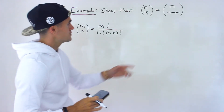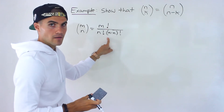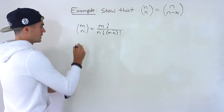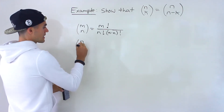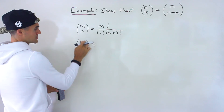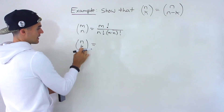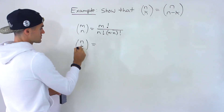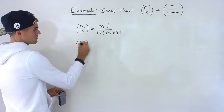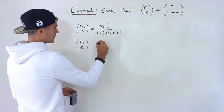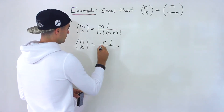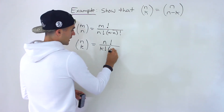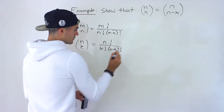What we want to do is convert these to this format with the factorials, and then if both sides are equal, we know they're equal. So n choose k is the easiest because the m is the n and this n is the k. So this follows the format directly: n factorial over k factorial times n minus k factorial.